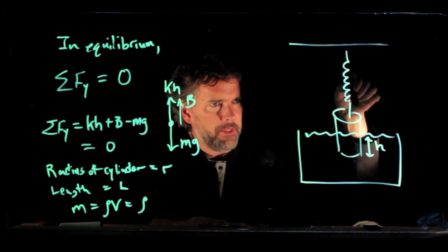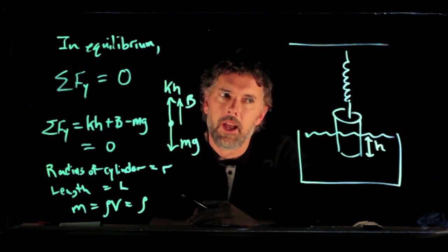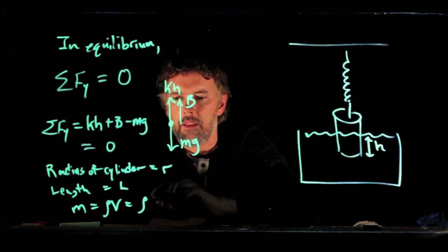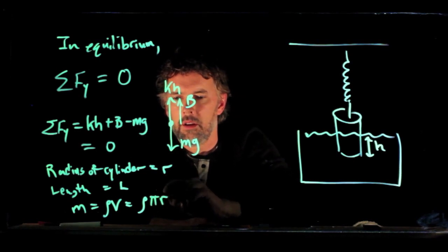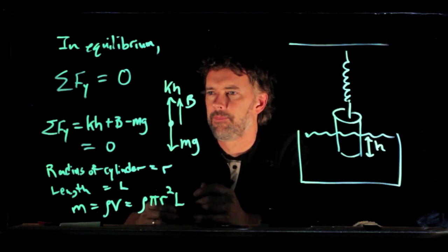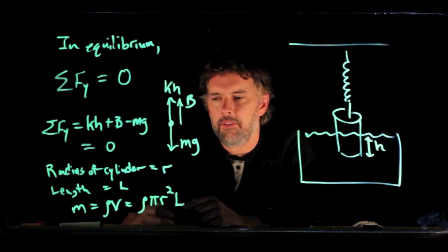What is the volume of a cylinder? Well, if I think about the area of one end, it's the area of a circle, which is, of course, pi r squared. And then I just have to multiply by the length so that the volume of a cylinder is pi r squared times l. All right, that gets us the mass of the cylinder.